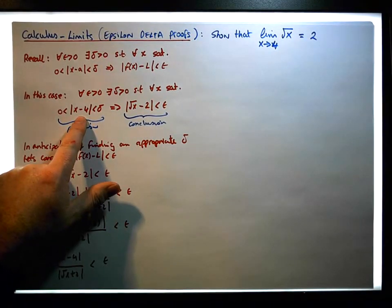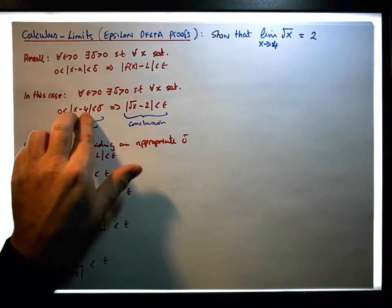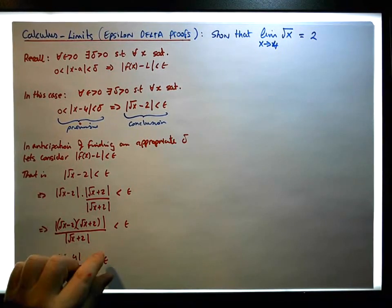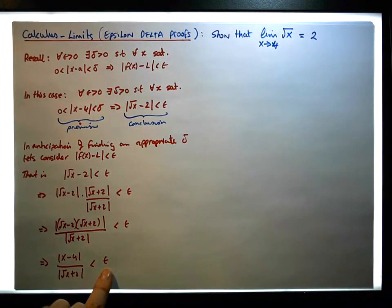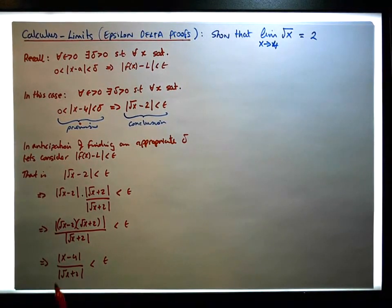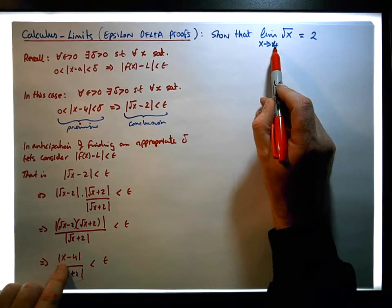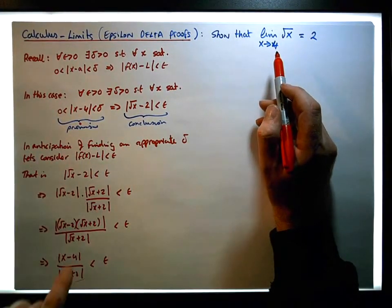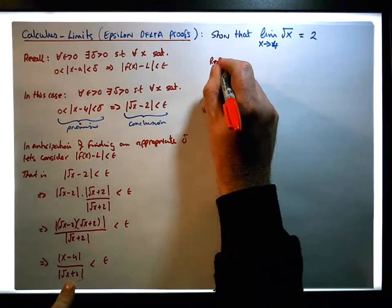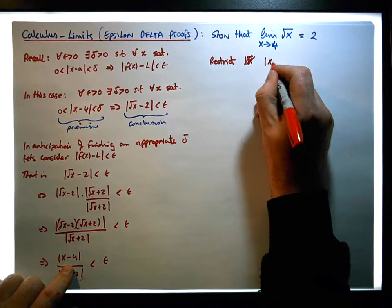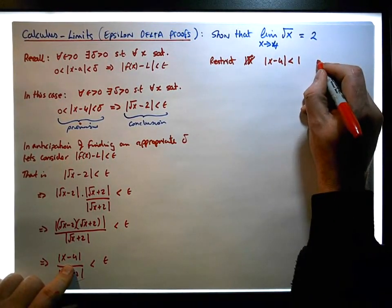We're nearly there. We have our premise. We could say that the absolute value of x minus 4 is less than the absolute value of the square root of x plus 2 times epsilon. But we just want our delta to be an actual number — not determined by a particular x value. We want it to be a specific number. So we need to find some number that bounds the square root of x plus 2. We can do this by restricting x minus 4. Let's get very close to 4 — say within one unit of 4. Let's restrict the absolute value of x minus 4 to be less than 1, meaning delta equals 1, and see what happens within one unit of 4.